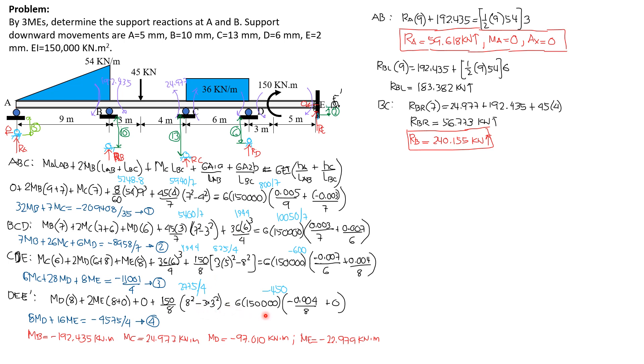Then equals 6EI, quantity. By the way, E and E prime are on the same level, so HA prime is 0. But D is below E by 4mm, so we have negative 0.004 meter over 8. The value is negative 450. This value is 2775 over 4. Combining the constants and simplifying, we have 8MD plus 16ME equals negative 4575 over 4.